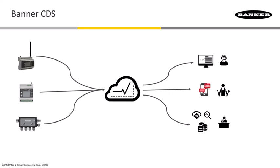CDS is a powerful cloud-based application for connecting and viewing industrial Internet of Things data. It helps you build graphs and dashboards of your data. It can help you configure alerts and notifications to users to warn them when equipment might need attention. It also gives you methods for exporting and analyzing your data with whatever business intelligence tools you might already be using. It's hosted and managed in the AWS cloud by Banner, so you don't have to worry about setting up servers, managing uptime, or building the visualization software from scratch.